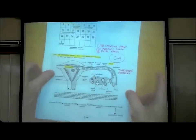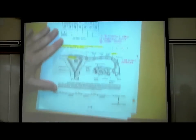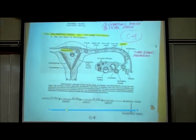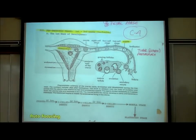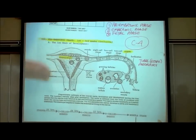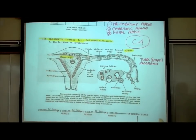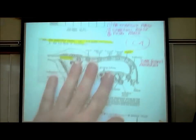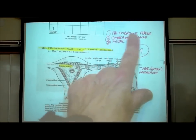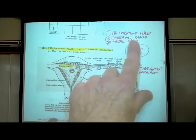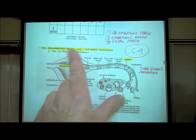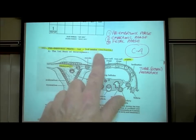Let's take a look at page C4. We've looked at it previously. What's the pre-embryonic phase? Remember, we divide embryonic development into pre-embryonic phase, embryonic phase, and fetal phase. The definition of the pre-embryonic phase is the first three weeks.